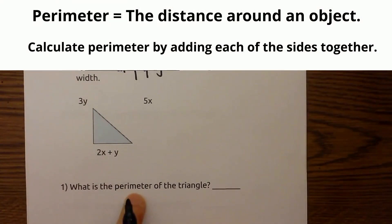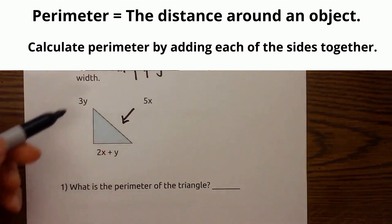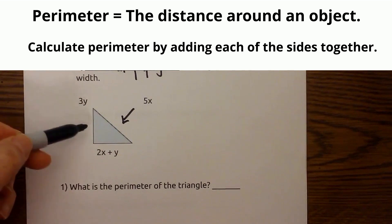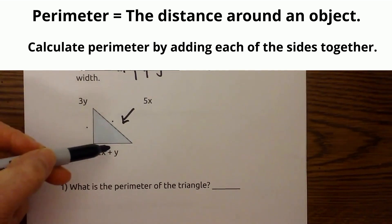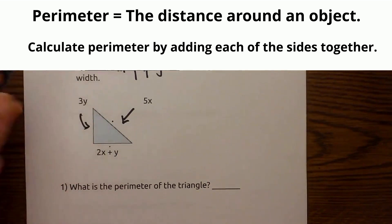First, what is the perimeter of the triangle? This goes right here. So I add this side plus this side plus the third side. So let me go ahead and add this.